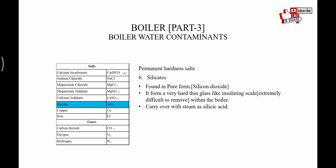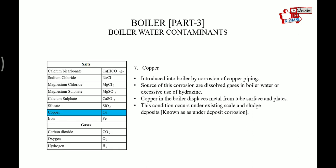Silicate is found in the form of silicon dioxide. It forms a very hard, thin, glass-like insulating scale which is extremely difficult to remove within the boiler. It is carried over with the steam as silicic acid. Copper is not a salt but is present as a contaminant. It is introduced in the boiler by corrosion of copper piping. Sources of this corrosion are dissolved gases in the boiler water or excessive use of hydrazine. Copper in the boiler displaces metal from the tube surface and plates, a condition known as under-deposit corrosion.